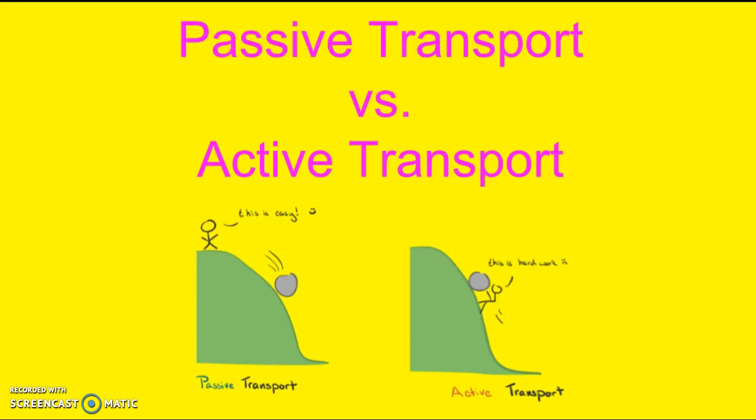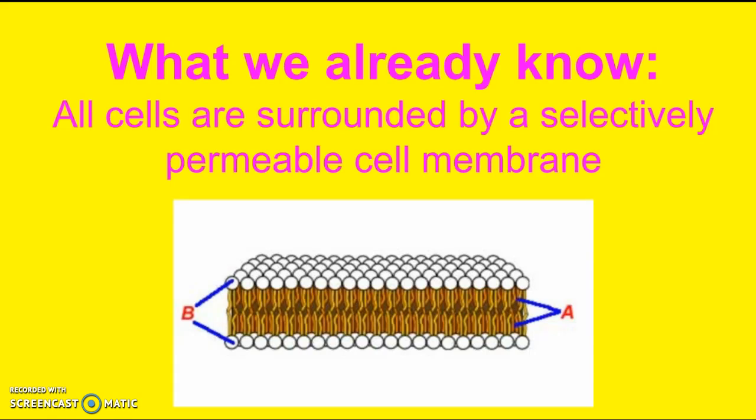Hi, Mrs. Young here, and welcome to my podcast today on passive transport versus active transport. This is what we already know: all cells are surrounded by a selectively permeable cell membrane. Selectively permeable means that the cell membrane lets some things in and some things out, but not everything can just go freely. So how do certain things like water, carbon dioxide, and oxygen get in and out of the cell?